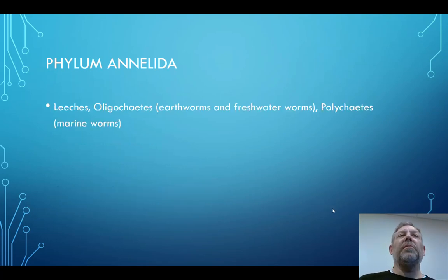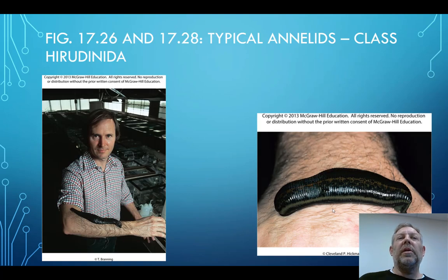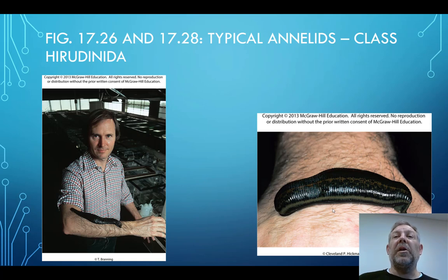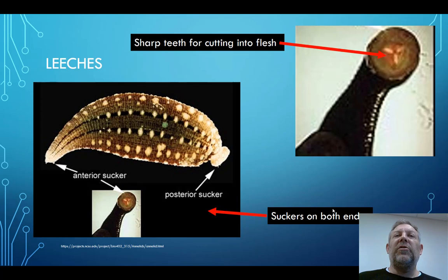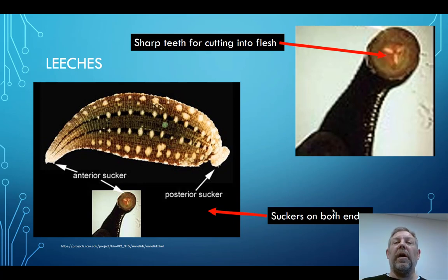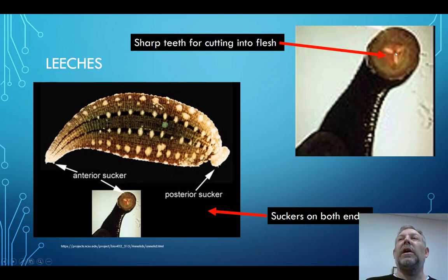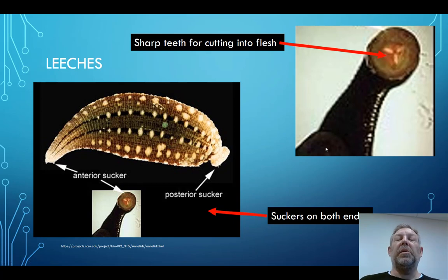This phylum includes earthworms, leeches, the oligochaetes or freshwater worms, and the polychaetes, which are the marine worms. The leeches are kind of cool — they have suckers on either end of their body, which allows them to hold on to the organism they're parasitizing. They've got really sharp teeth arranged in a unique order. They can cut a small hole and suck the blood. They release anticoagulants, which allow the blood to keep flowing, and also a little bit of anesthetic so you don't feel it when they bite into you.